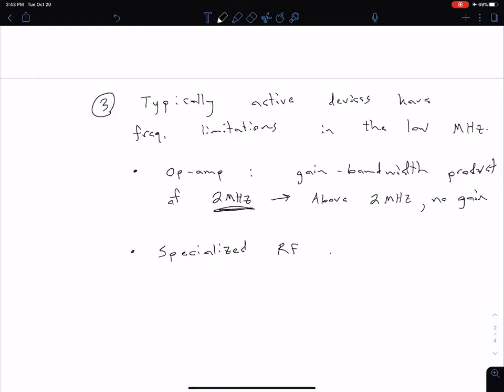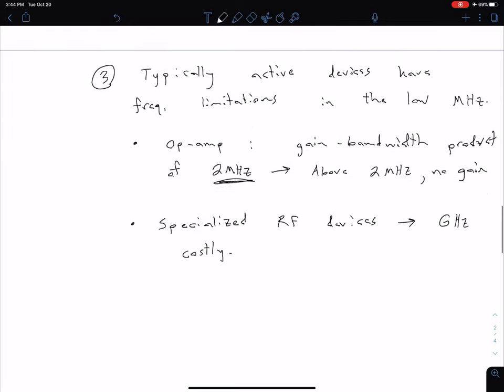So of course we can buy some specialized RF devices, but it's going to be more costly, so specialized RF devices. And so those can be discrete or they can be packaged in integrated circuits. So that is available though, and these can go up into the high gigahertz range, but more costly. So we want to keep that in mind. So we do have ways to work around this, but depending on this particular application, you might be trying to keep costs down. So that might not be a best option.